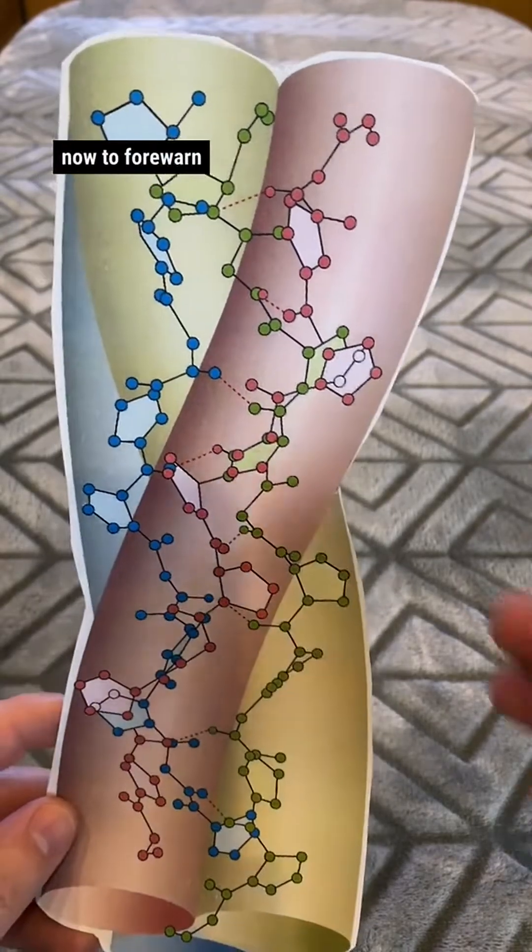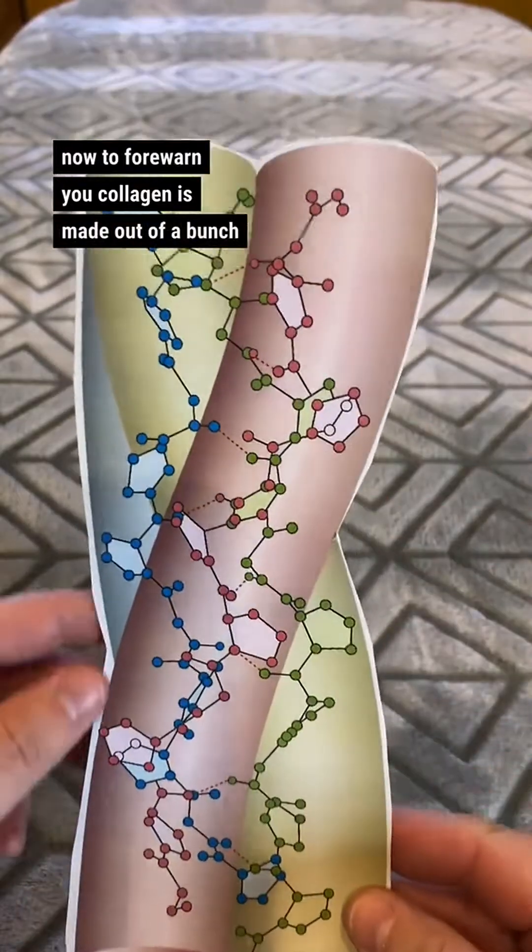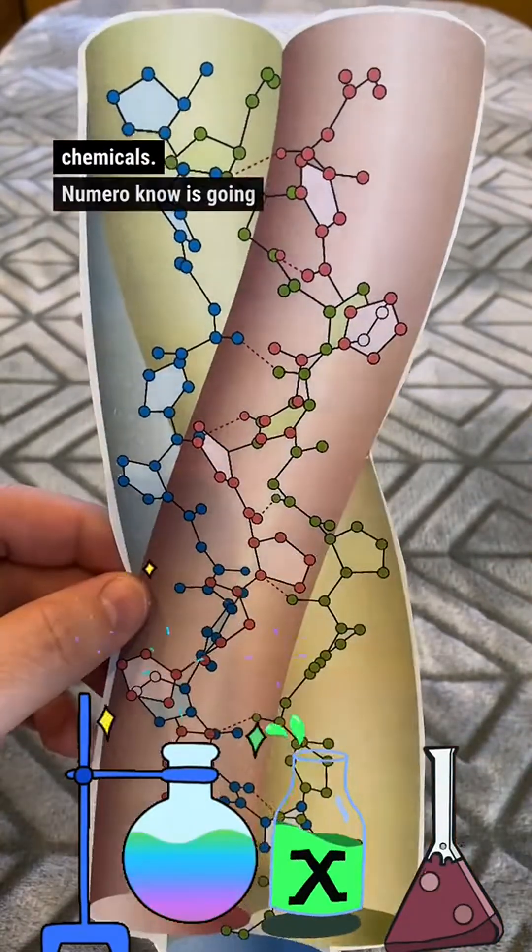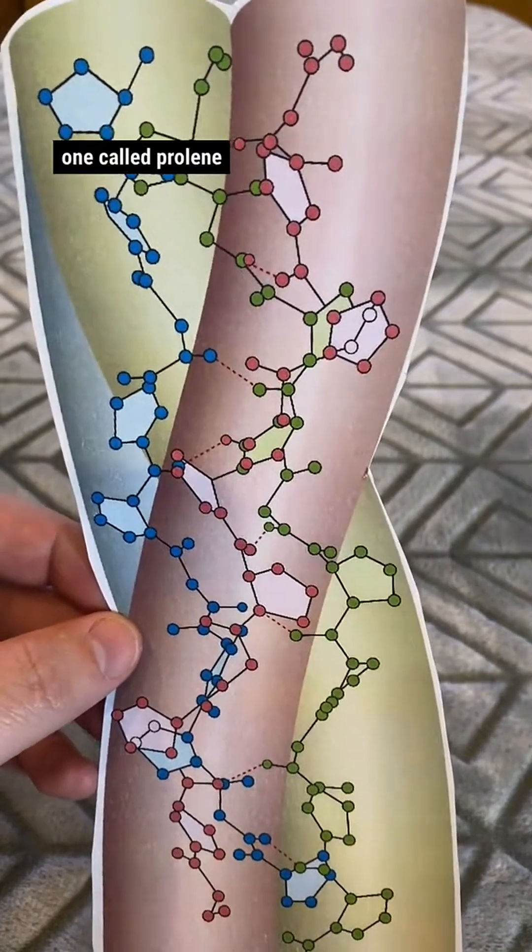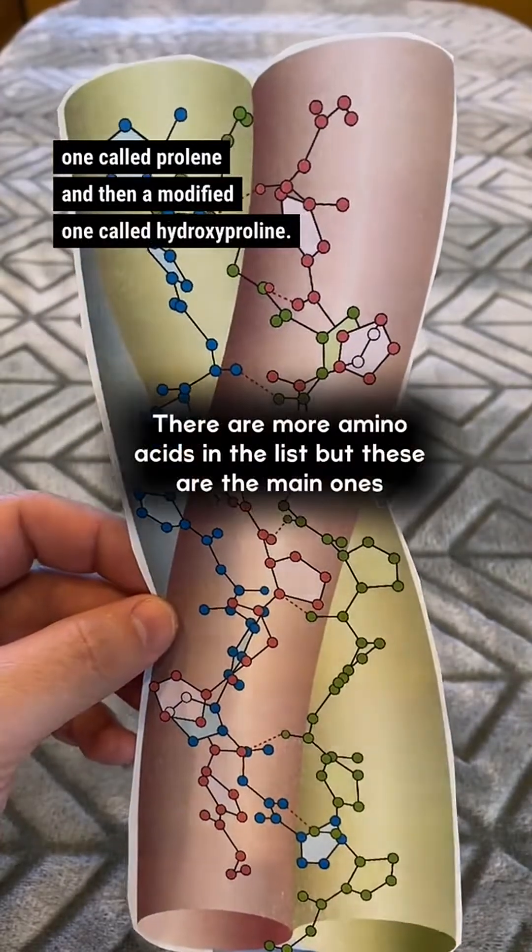Now, to forewarn you, collagen is made out of a bunch of scary-sounding chemicals. Numero uno is going to be glycine, and then there's another one called proline, and then a modified one called hydroxyproline.